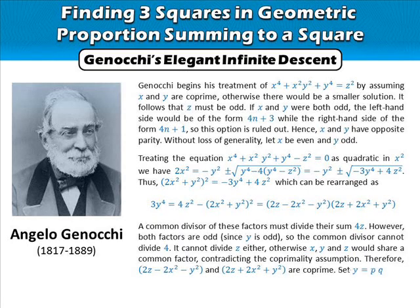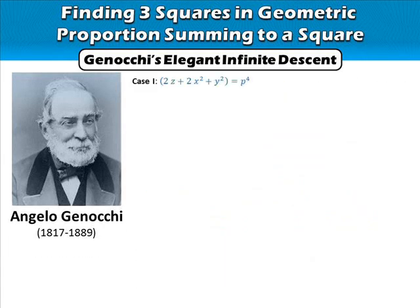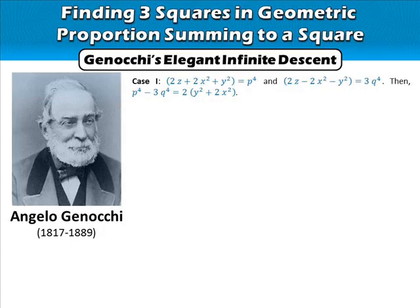Therefore these two factors are co-prime. Set y = pq with p and q both odd. The problem now splits into two cases. Case 1: 2z + 2x² + y² = p⁴, and 2z - 2x² - y² = 3q⁴. Then p⁴ - 3q⁴ = 2(y² + 2x²).